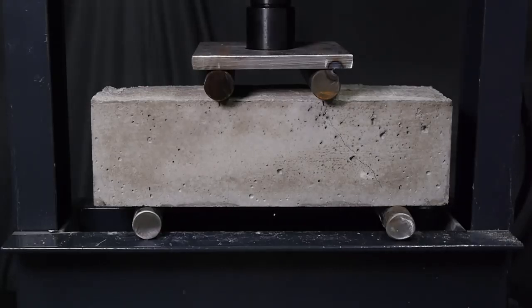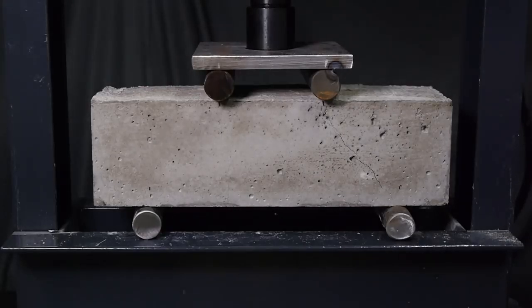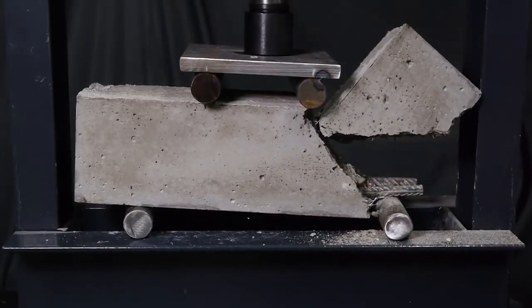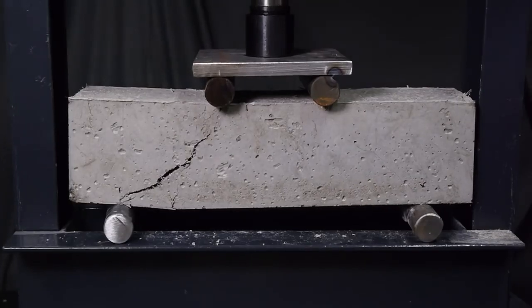Both beams failed at about the same load as the first one, which I expected. Like I mentioned, the fibers don't really add much overall strength to the beam, but you can easily see that they could go a long way in preventing corrosion of steel rebar.